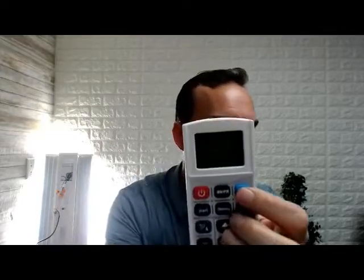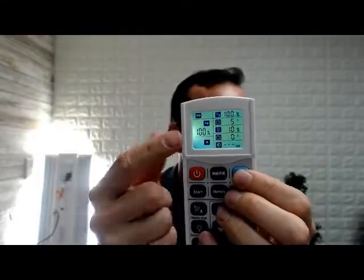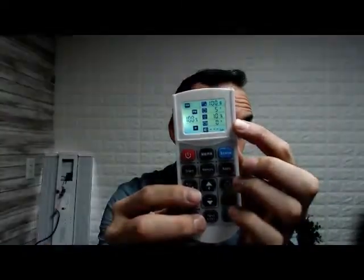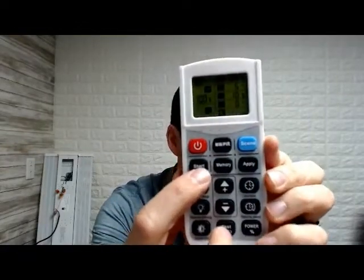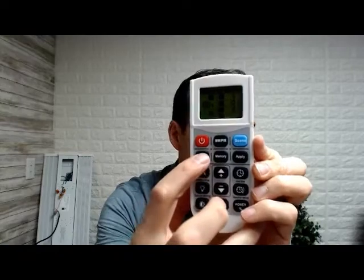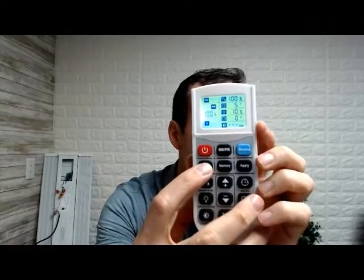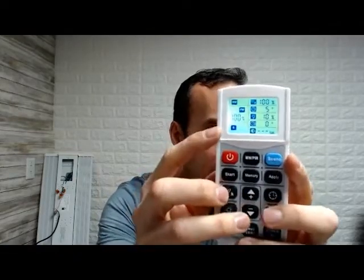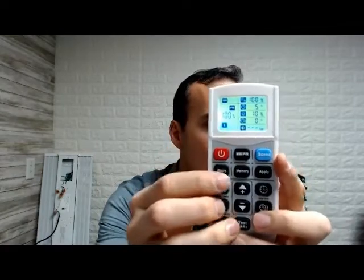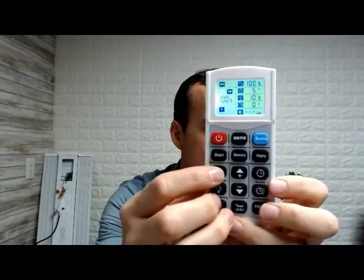So what we're going to do is we're going to come over here to scene. And when I press scene, you can see that all of these lines over here on the side, they light up and they become available. Now once I press scene, in order for me to actually start to program the remote, I have to press the start button. So I'm going to press start. And you can see there's an S that starts to blink over here on the side. What we're going to do now is we're going to start setting our settings.